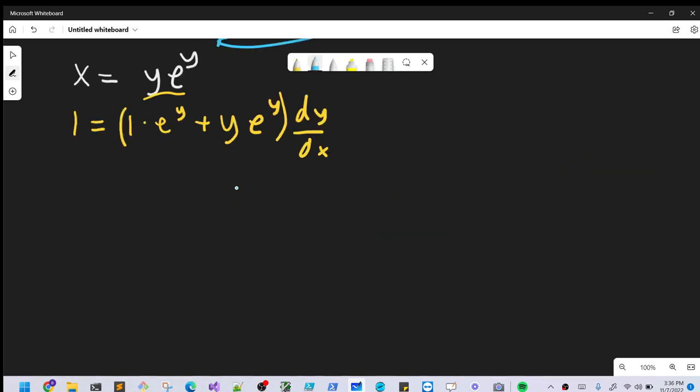So next what we can do is just divide by this whole part. In order to isolate our dy/dx, we're going to have dy/dx equals 1 over, let's just change the order a little bit, so we'll have ye^y plus e^y.